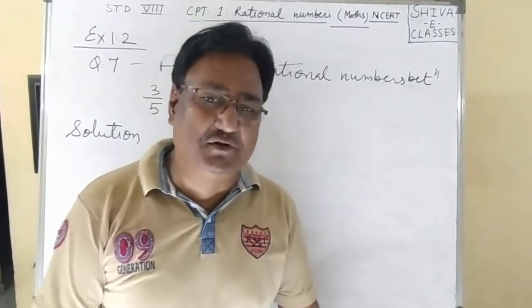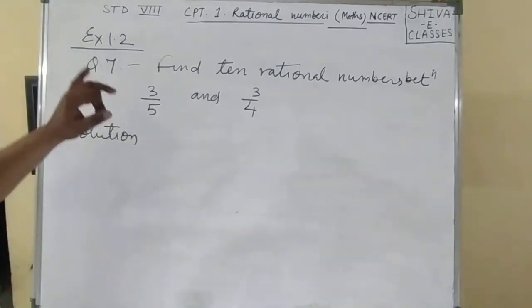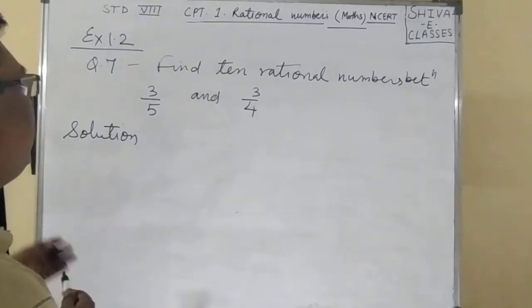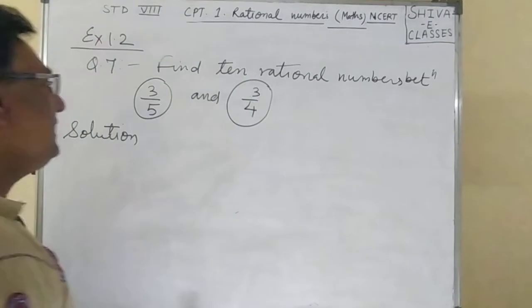Hello guys, myself Shirupal sir from CY classes. Question number 7 is exercise 1.2. Find 10 rational numbers between the given numbers 3 by 5 and 3 by 4.